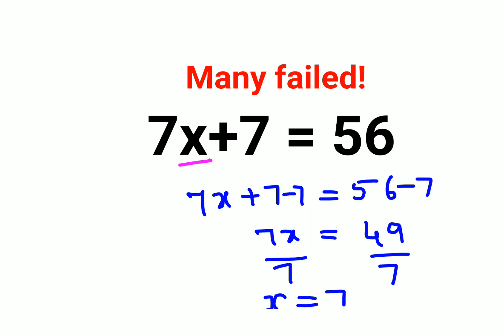Okay, let's put this value in the original question. So we have 7x which is again 7 plus 7. So 7 times 7 is 49 plus 7 gets you 56.